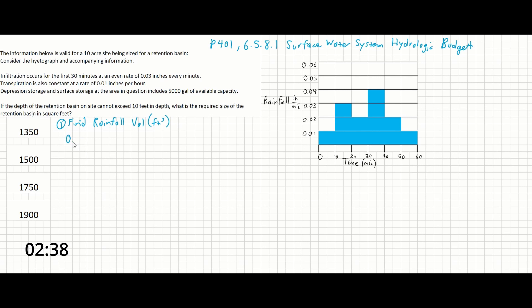So we have 0.01 plus 0.03 plus 0.02 plus 0.04 plus 0.02 plus 0.01. And that will get us 0.13 inches times the 10 minutes that each of those values is occurring over.